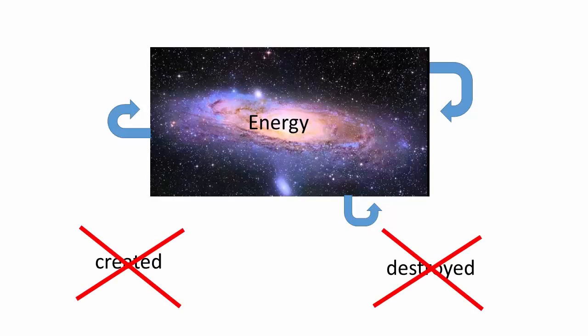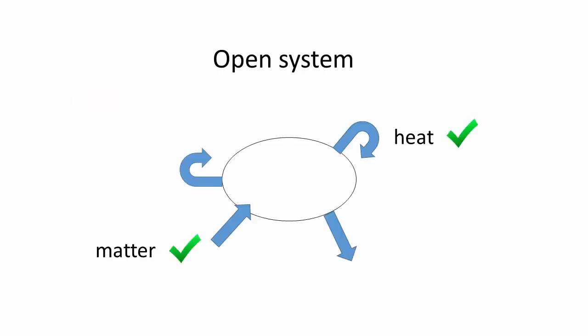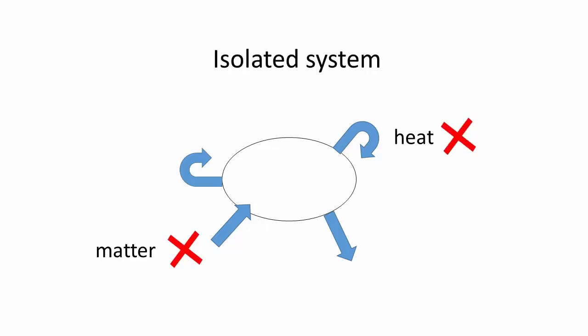In thermodynamics, one must define a system. Systems may or may not allow the transfer of matter or of heat. If both are allowed to transfer, the system is open. If only matter cannot be transferred, it is a closed system. If neither can be transferred, then the system is said to be isolated.